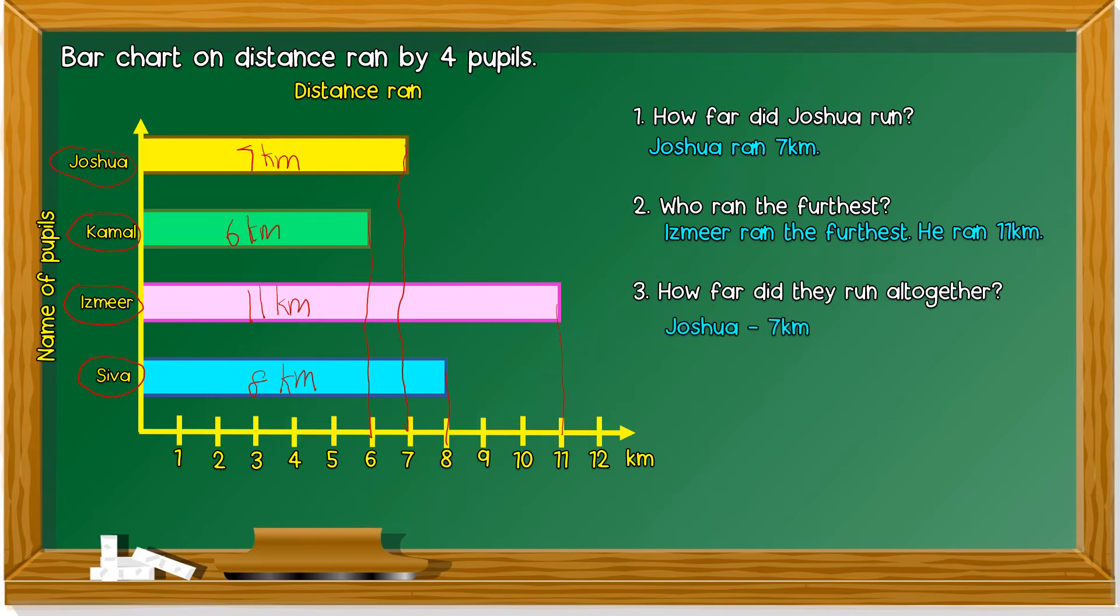So, Joshua just now we know is seven kilometers. Kamal, six kilometers. Ismael, eleven kilometers. And Siva, eight kilometers. So, we add them up together.